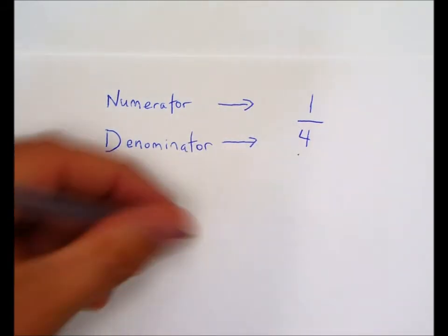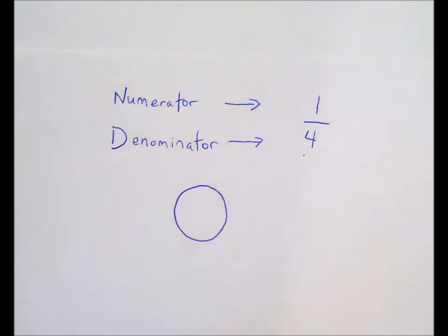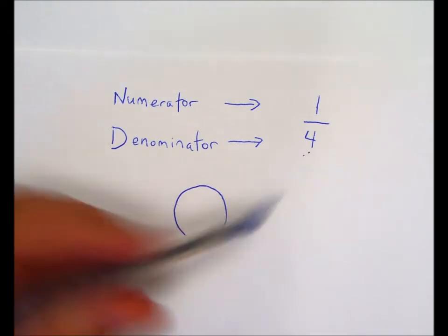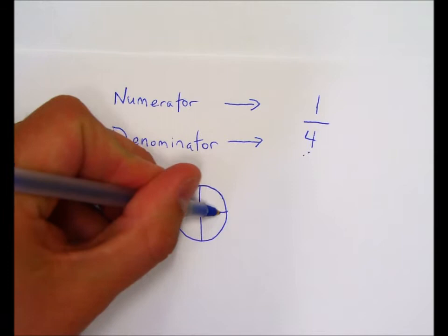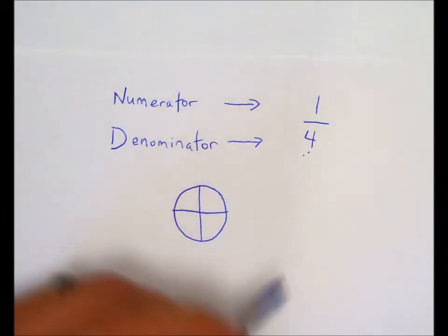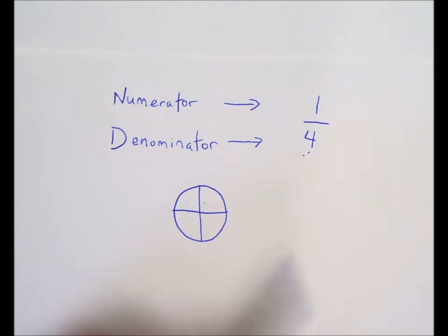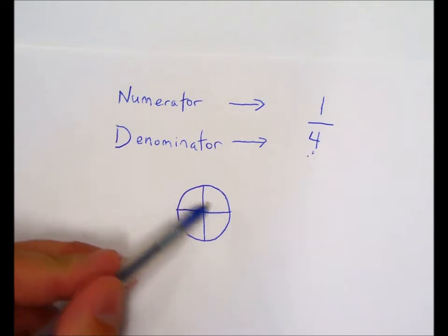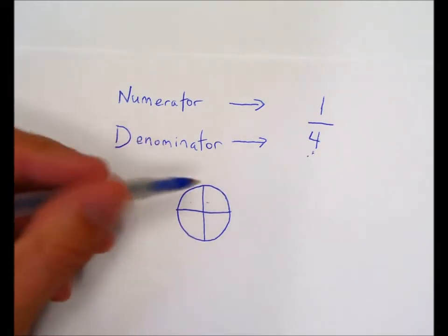So for example, if I had a pizza, which is the classic fractions example. If I have a pizza, and it's divided into four pieces, that would be represented by the denominator. So assuming that all of these four slices of pizza are the same size, that would say that four would be our denominator because our pizza is divided into one, two, three, four portions, equally sized portions.